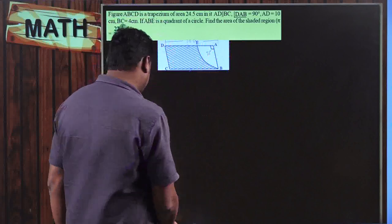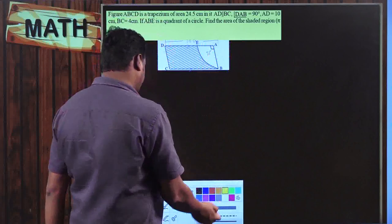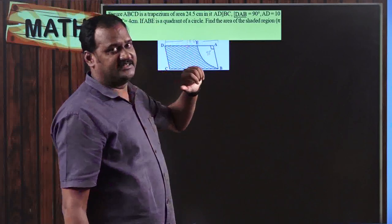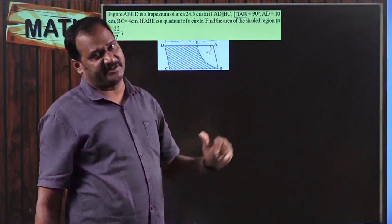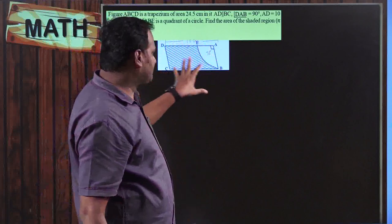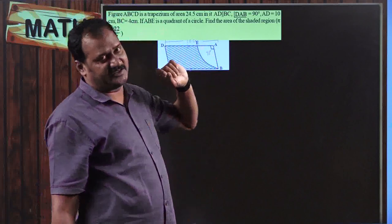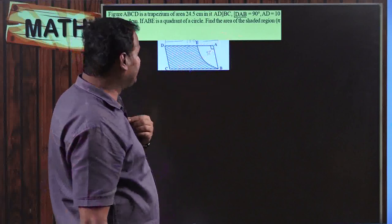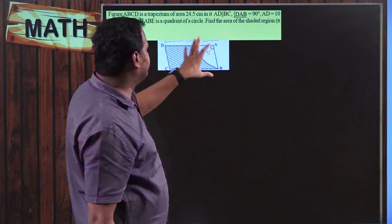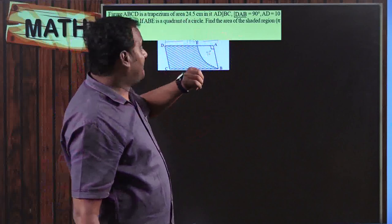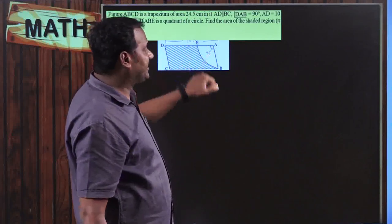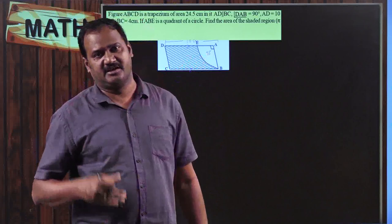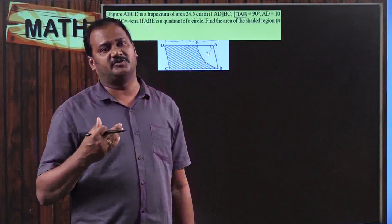It is pretty much clear that the area of the shaded region is actually a part of our trapezium. So area of the trapezium minus area of this quadrant of a circle will give the area of the shaded region. A quadrant means a quarter part — that is, one fourth part of a circle.